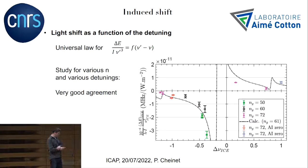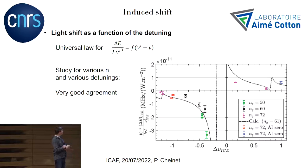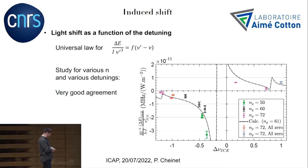Before the conclusion, you can obtain a universal law by normalizing the light shift in the right manner. All experiments performed with three different principal quantum numbers fall quite nicely on the same plot when scaled correctly, showing that we understand the physics of this auto-ionization process well. The points on the auto-ionization zeros are clearly identified on this universal plot.